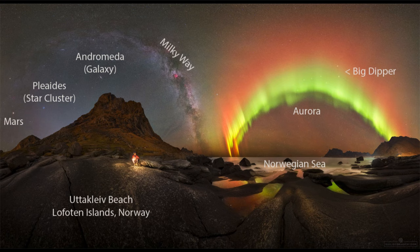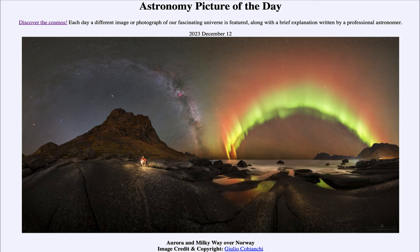So we get to see all of those things here in this view, showing us objects from as close as within our own atmosphere — things like the aurora — to other galaxies like the Andromeda galaxy, well over 2 million light years away. That was our picture of the day for December 12th of 2023, titled Aurora and Milky Way over Norway. We'll be back again tomorrow for the next picture — have a great day, everyone, and I will see you in class.